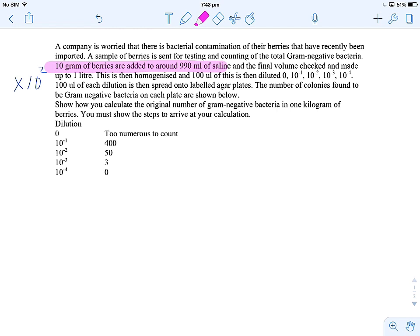Now I'll go back to the highlighter pen and you can see that here we've put 100 microliters on an agar plate. So this is actually one tenth of a mil. So to get back to a mil we have to multiply by 10 to the 1.